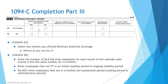Part 3 of the 1094-C — Column A indicates to the IRS that you offered a minimum essential coverage plan, either for all 12 months or specific months. If you weren't in existence at the start of the year or didn't have a plan until July, for example, you'd check yes for July through December and no for January through June. If you covered all 12 months, even with a non-calendar plan year, you can check the all-12-months box on line 23.